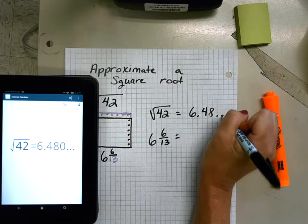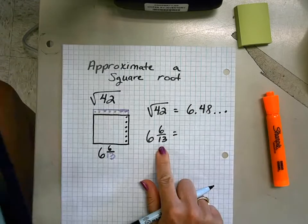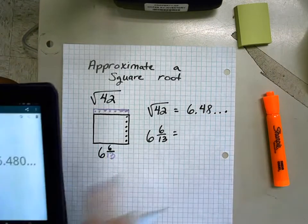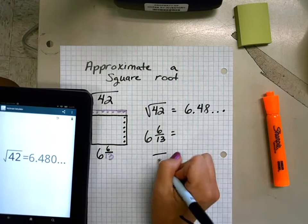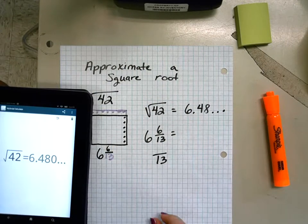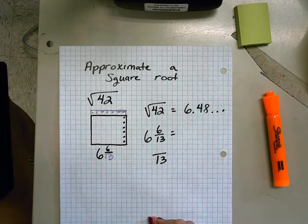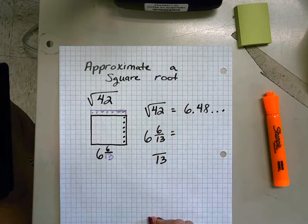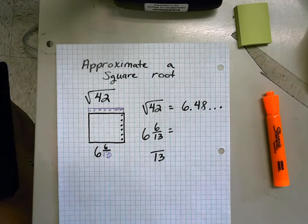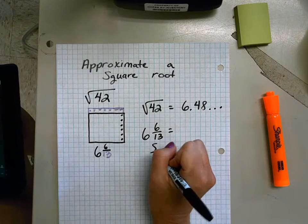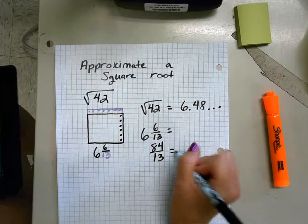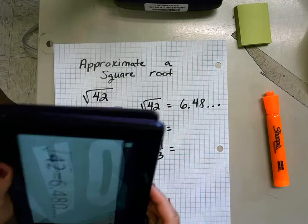Now let's go ahead and do six and six thirteenths. The MyScript might find that a little tough, so I'm going to go ahead and make that an improper fraction. So six times thirteen plus six, which is seventy-eight plus six, which would be eighty-four. So I'm going to put eighty-four thirteenths.